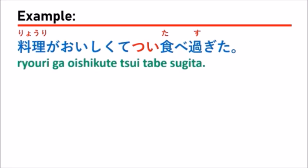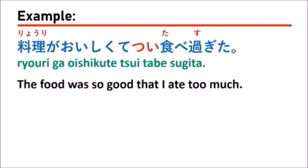The next example: 料理がおいしくてついたべすぎた。 Which means: 'The food was so good that I ate too much.' That means when you eat some food, you're paying attention because you're on a diet. But when you see delicious food, you think you'll eat just a little bit and then stop. But the food is too delicious and you like it very much, so you cannot stop yourself and you ate too much.